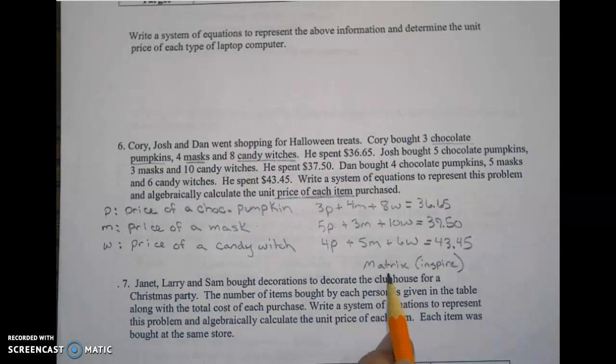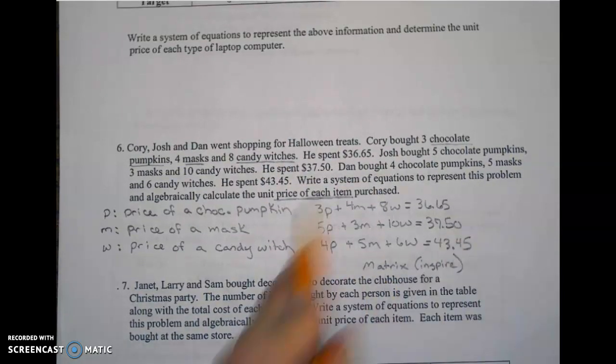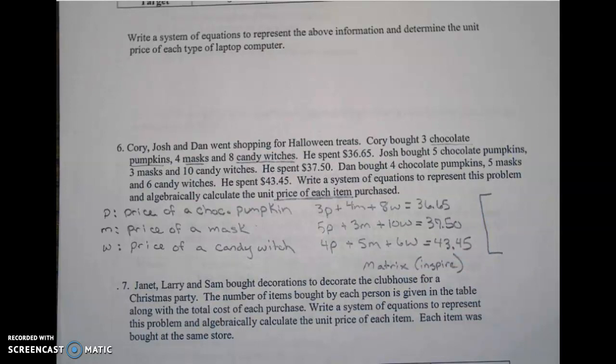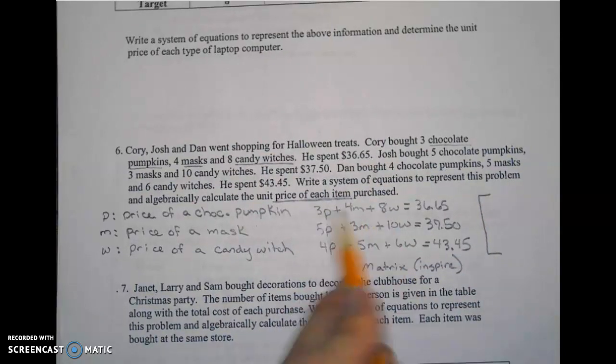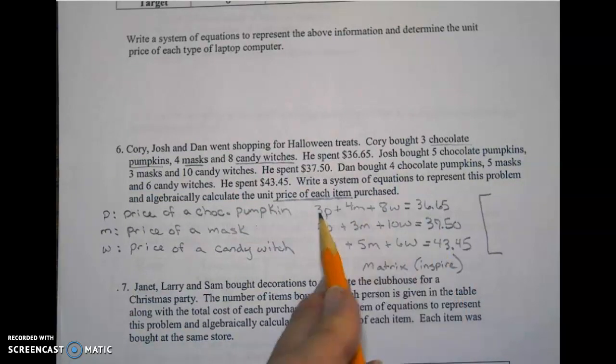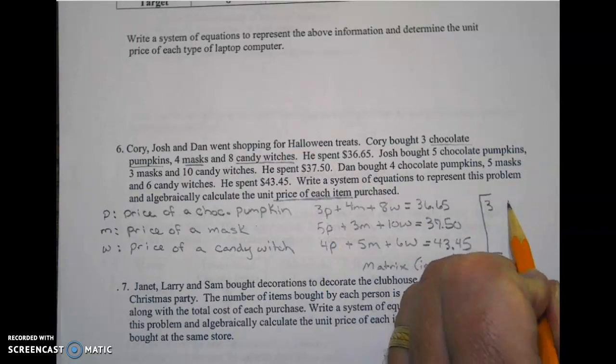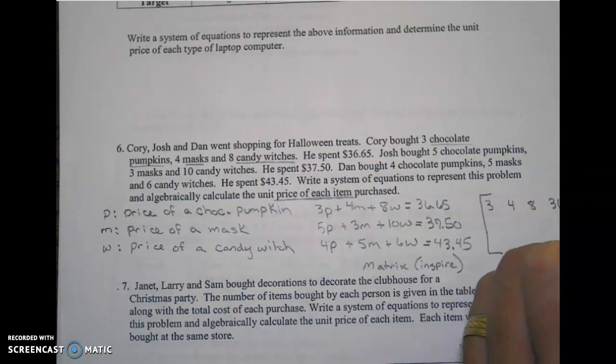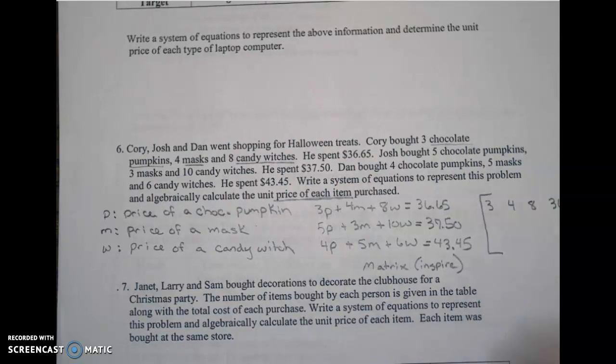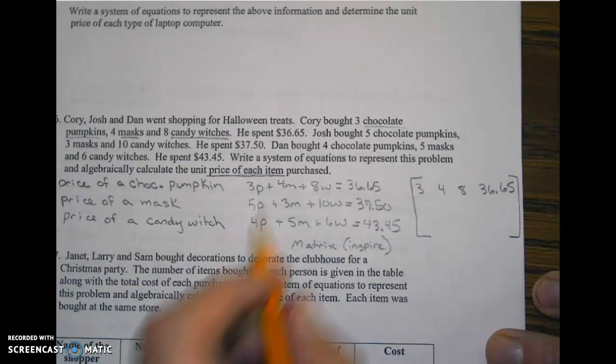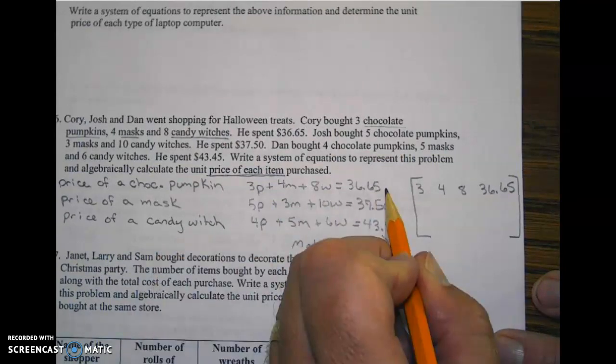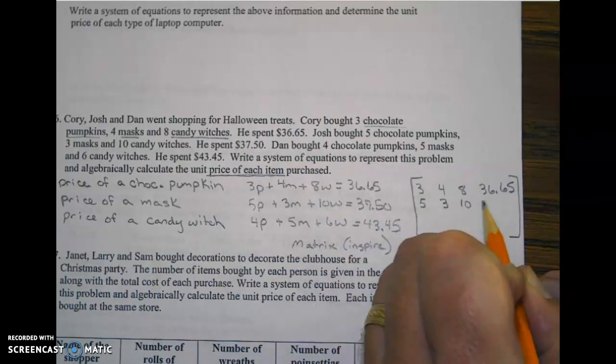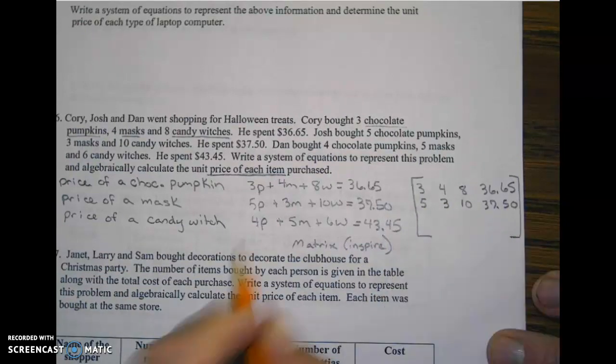First thing we need to do is learn how to write the matrix for this. It's very simple. We make a large bracket and we use only the coefficients on the variables and the total. So 3, leave a space, 4, leave a space, 8, then 36.65, then we close our matrix. Next row, so we're doing rows right now. That's row 1. Row 2 is 5, 3, 10, 37.50. Row 3 is 4, 5, 6, 43.45.